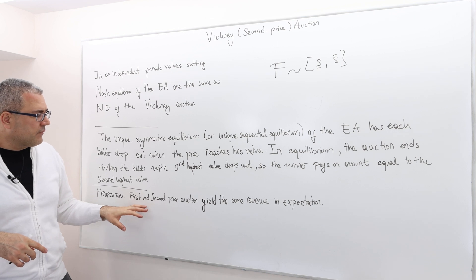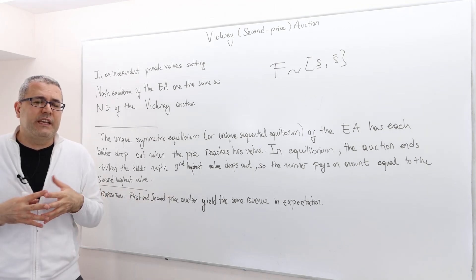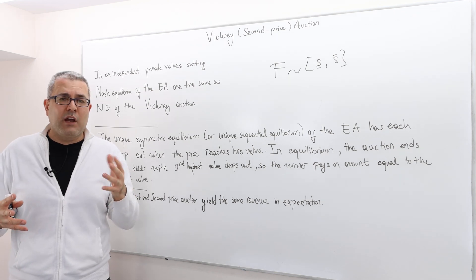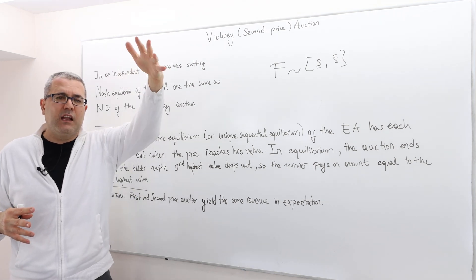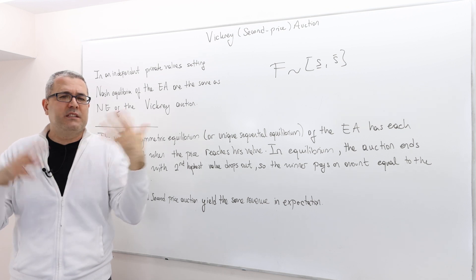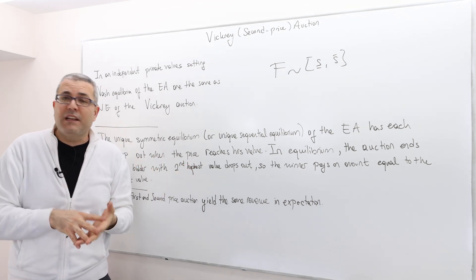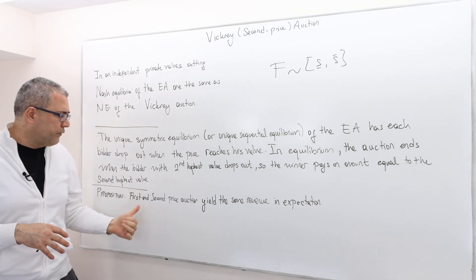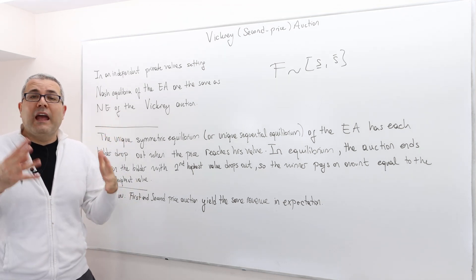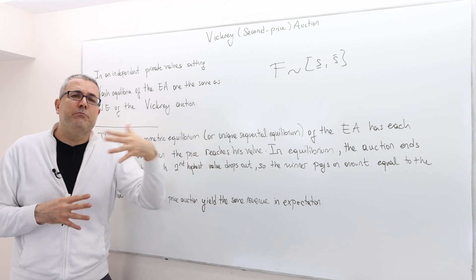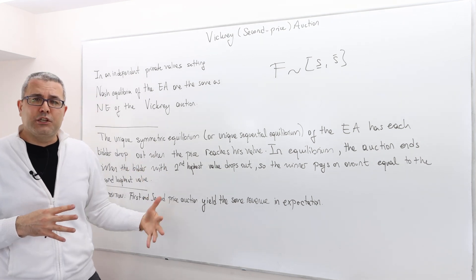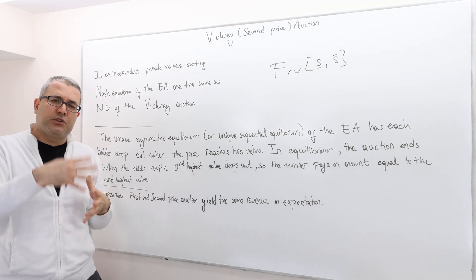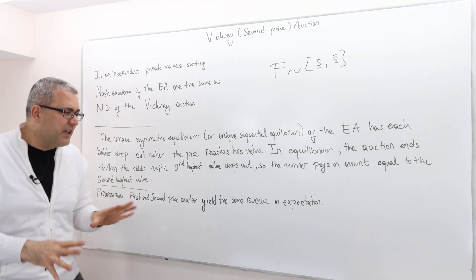Well, one thing. Remember, the second price auction can actually have a bunch of different non-symmetric equilibria. One guy bids his value and everybody else bids nothing, zero. If that is the case, clearly your expected revenue is going to be zero. But if you run first price auction and if the players are playing symmetric Bayesian-Nash equilibrium, which we characterized, then clearly first price auction is going to give you a higher expected surplus. So here, this comparison, this theorem is slightly tricky because we are focusing on particular equilibria.